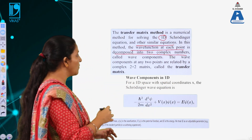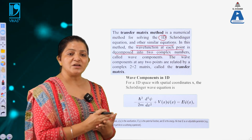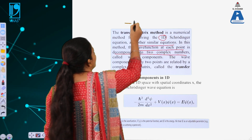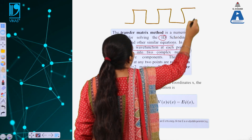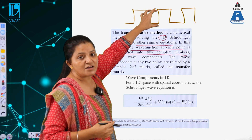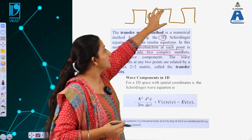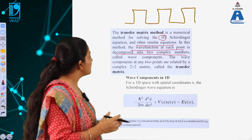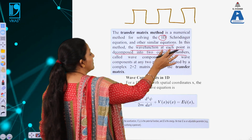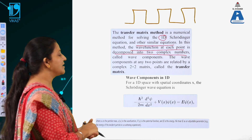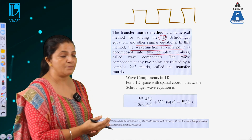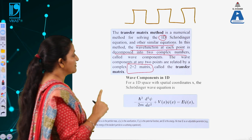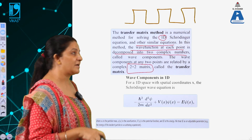Why is the wave function decomposed into two complex numbers? Because we are taking either the positive energy or the negative energy of the particle, since the potential of the particle is continuously changing in this box — it can have a positive or negative value. Depending on whether the particle is in the positive potential region or the negative potential region, the wave function can be divided into two components. When divided into two components, a 2x2 matrix is formed, known as the transfer matrix.